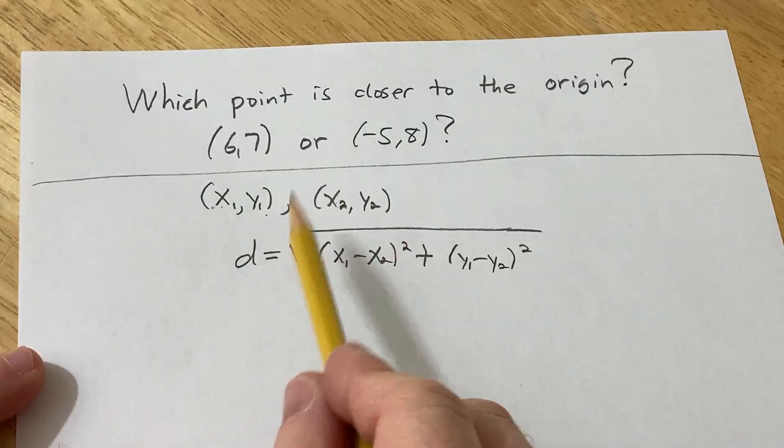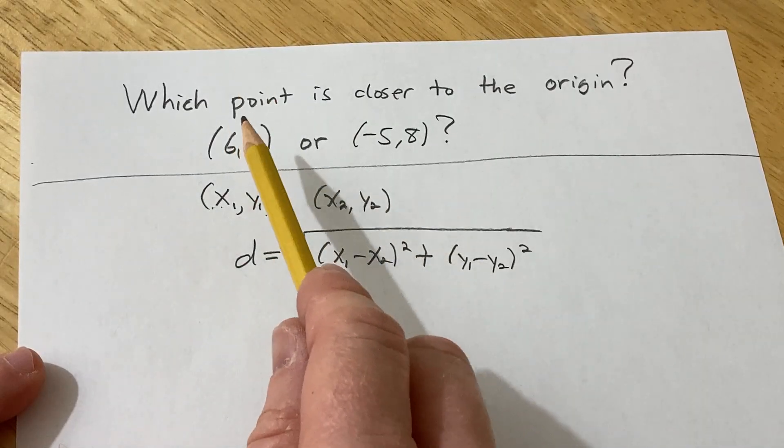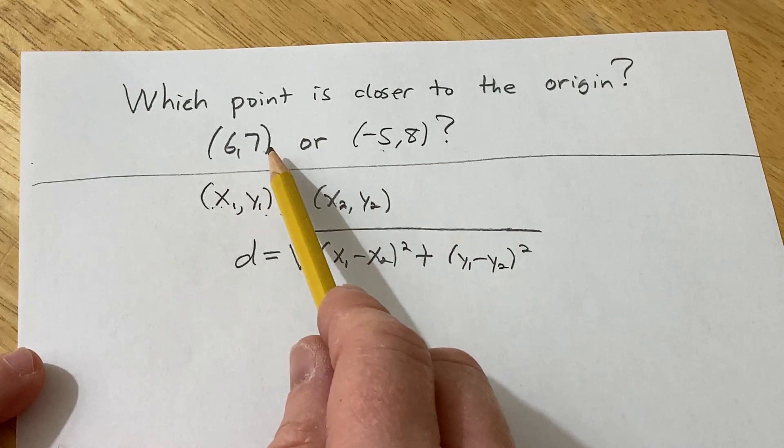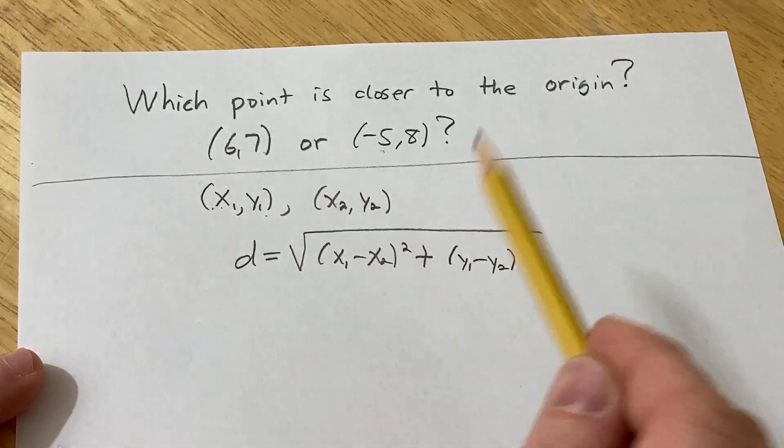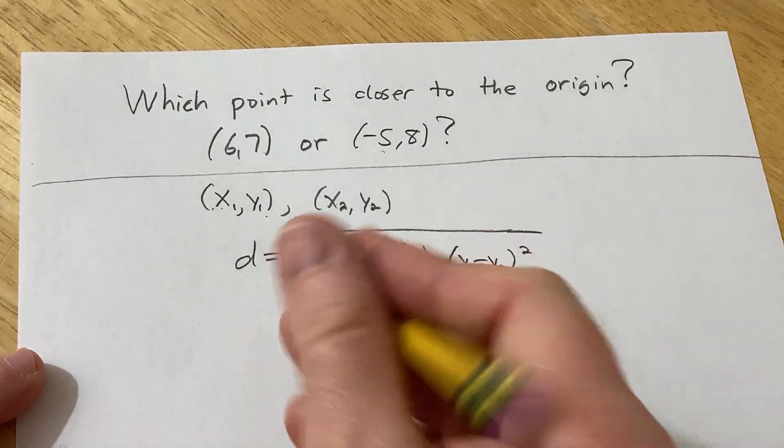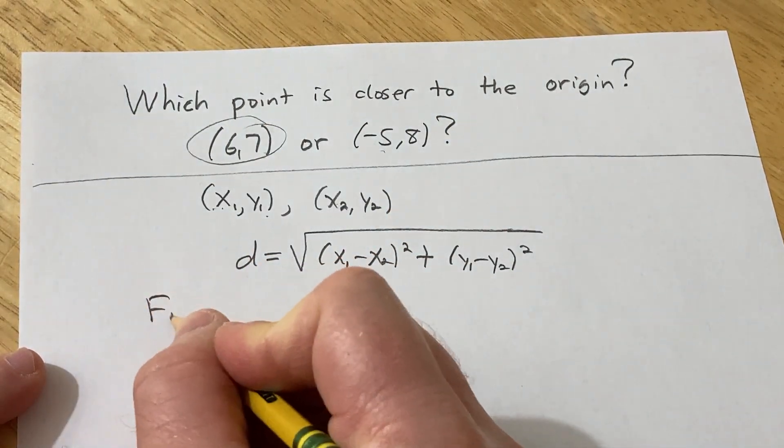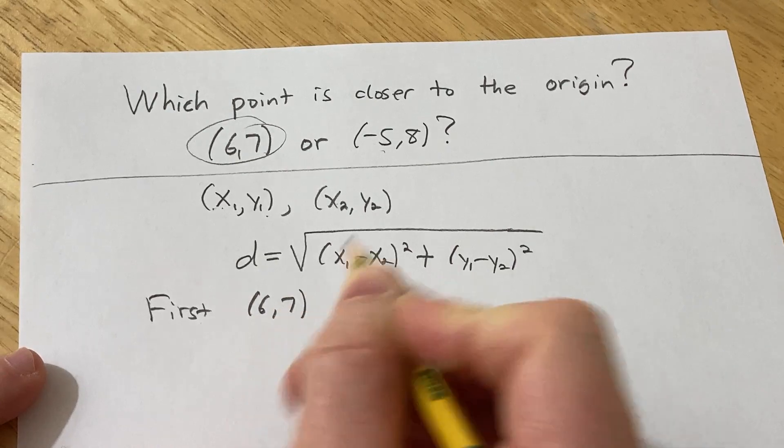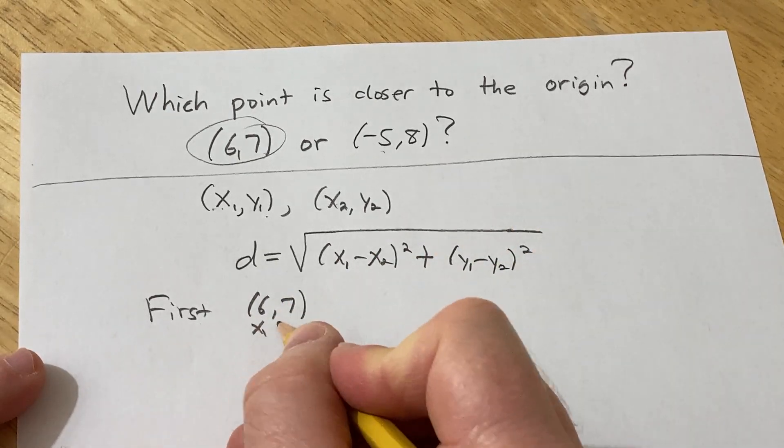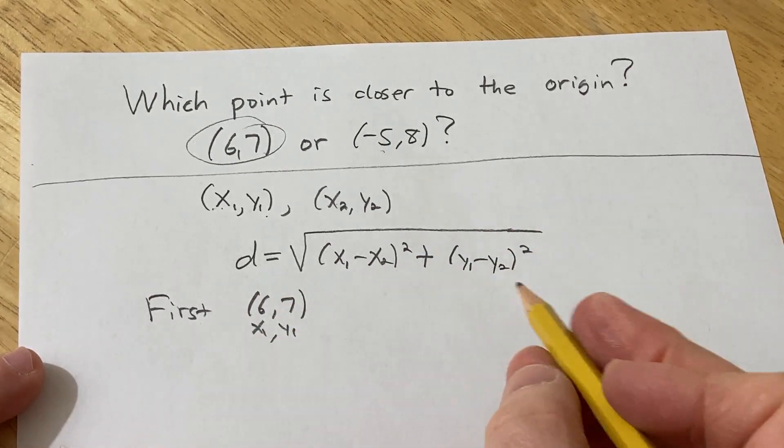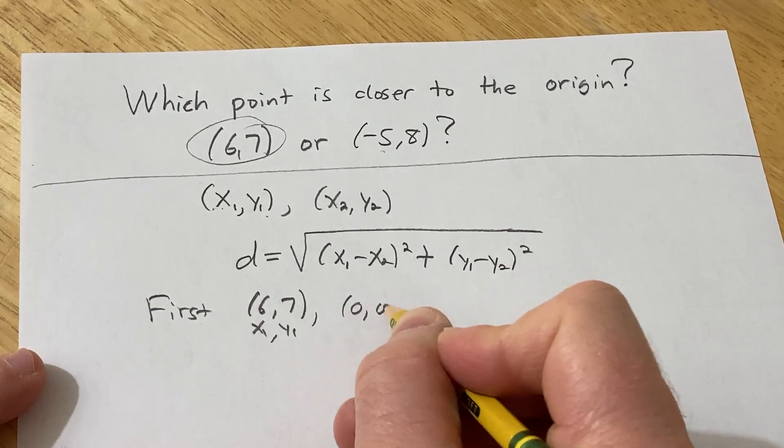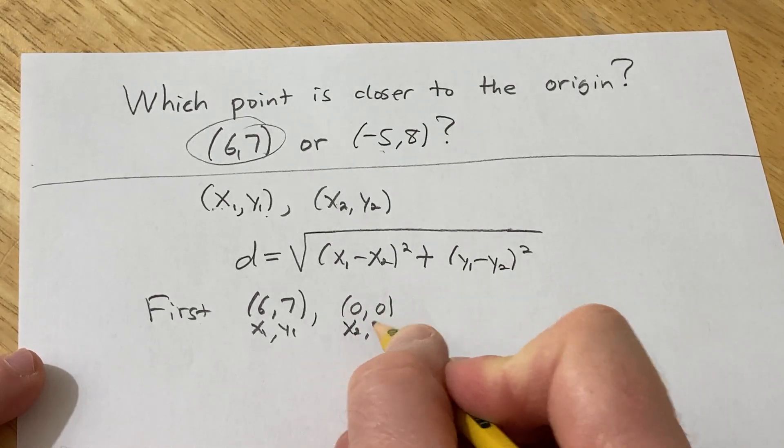So what we're going to do in this problem is basically compute the distance between each of these points and 0, 0, and the smaller distance means that we're closer to the origin. So first let's do this one. So if we do 6, 7, so first 6, 7. So we can take this to be x1, y1, and then for x2, y2, we'll take the origin. So this will be x2, y2.